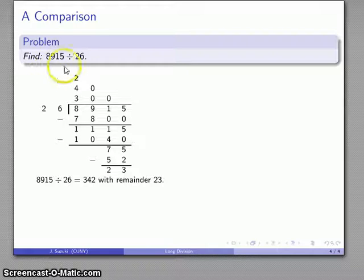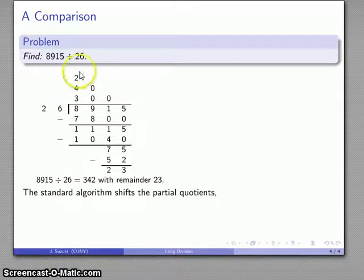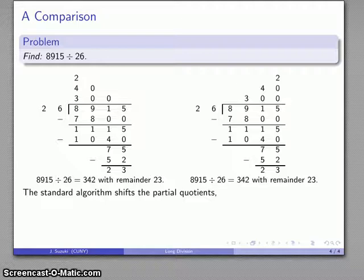Now if I want to use the standard algorithm, what I'm going to do is I'm going to shift all of my partial quotients so they line up with the dividend again. Not obvious why you would care, but we'll go ahead and shift them so that they line up with the dividend.